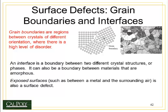A new type of defect is called an interface — a boundary between two different types of crystals, or two different ways of organizing matter. It can even be a boundary between a crystalline material and an amorphous material. There's also the exposed surface, such as between a metal and the surrounding air. This is also a defect, and it's the reason corrosion happens at the surface, because the defect has higher energy than the interior of the metal.